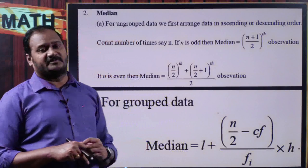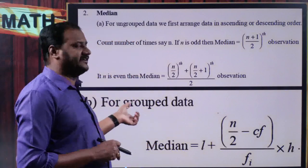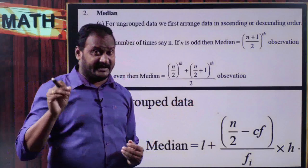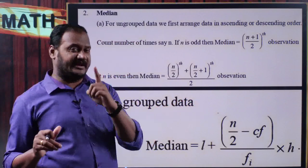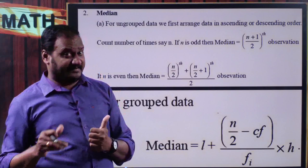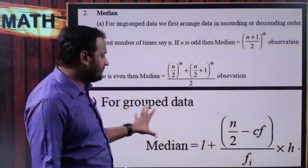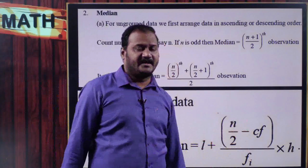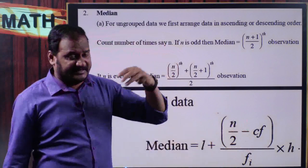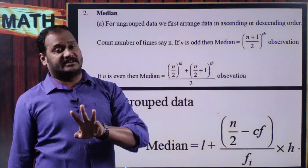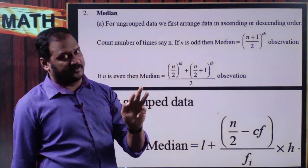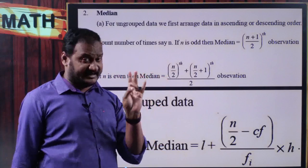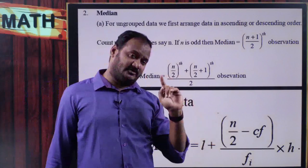In this chapter, we have only three formulas for measures of central tendencies — one for arithmetic mean, one for median, one for mode. There are four exercises: the first exercise is on mean, the second is on mode, the third is on median, and the fourth is on graphs. In board examinations, you can expect about 90% of the time a problem related to median compared to mean and mode.